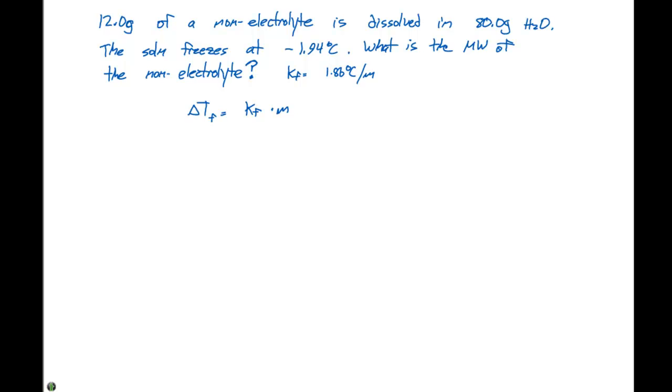In one of the previous videos when we talked about colligative properties, we discussed being able to determine the molecular weight, and this is an example of that type of problem. So our change in temperature is 1.94 degrees Celsius. That's going to equal KF, which is 1.86 degrees Celsius per molal, times the molality.